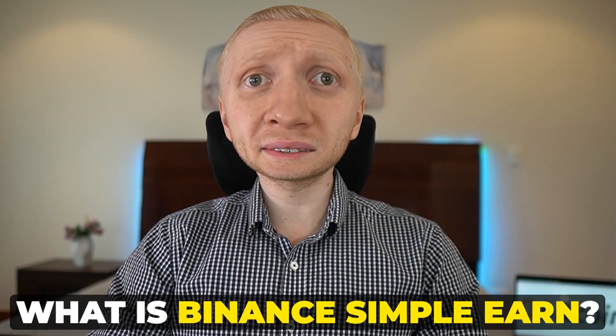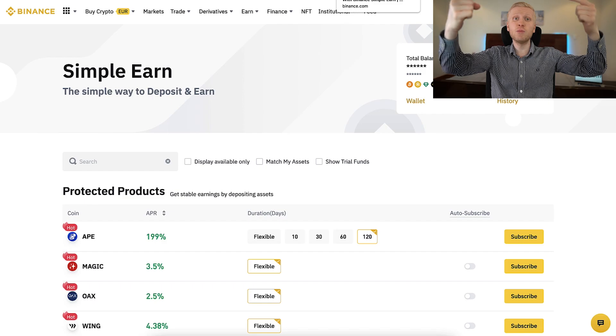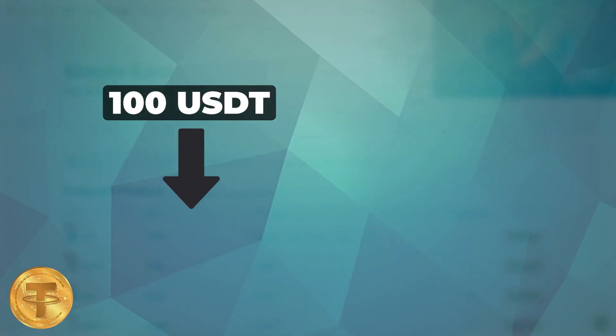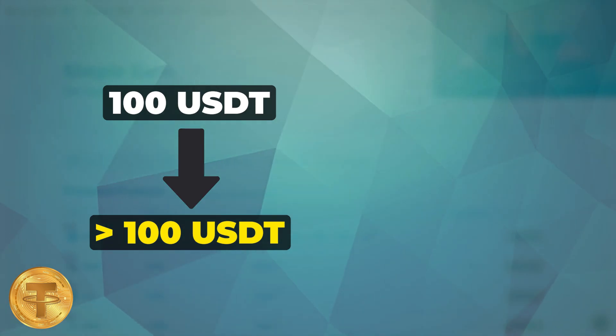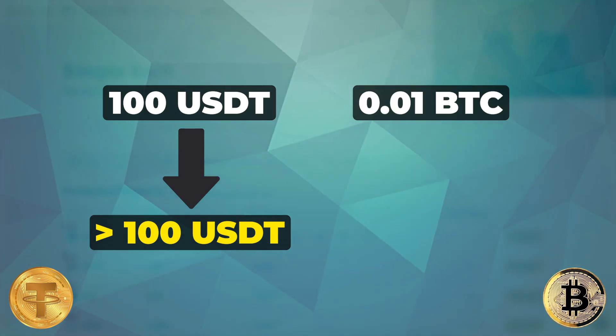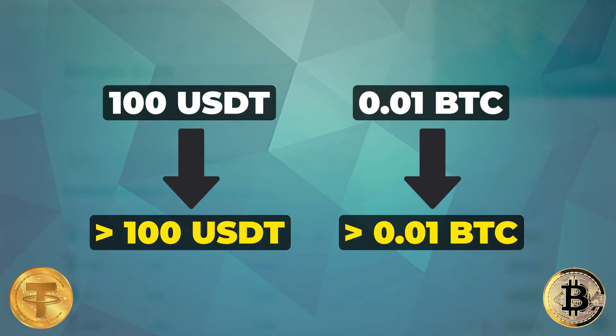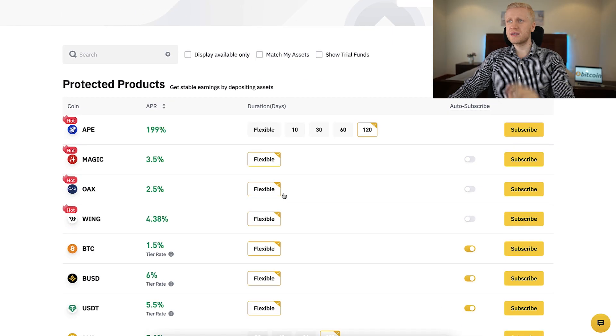So what is Binance Simple Earn? It's a principal protected product that allows you to earn money automatically every single day. Principal Protected means that you will get more coins than you put in. For example, if you put 100 USDT, you will get back more than 100 USDT. If you put 0.01 BTC, you will get back more than 0.01 BTC.